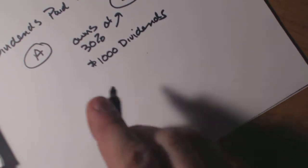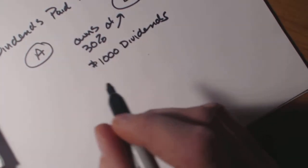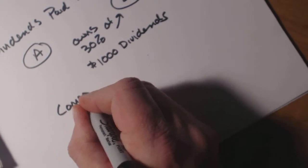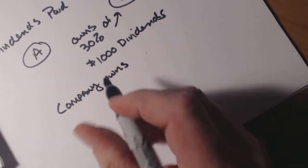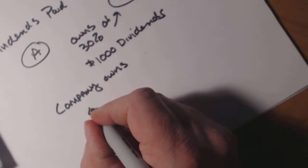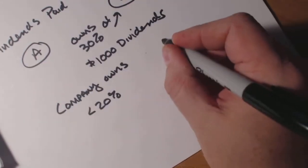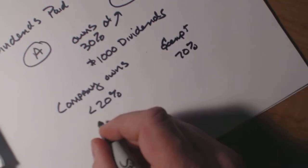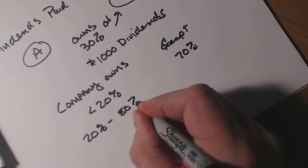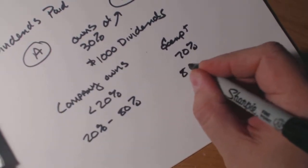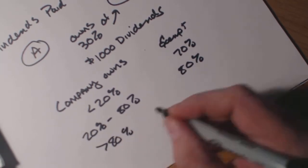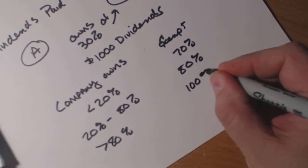But by tax code, there is something called an exemption, which says that if a company owns, and there's a little chart here, less than 20%, they are exempt on 70% of the revenues that they received on the dividends. And if they own between 20% to 80% of the company, they are 80% exempt. And if they are greater than 80% of the company, they are 100% exempt.